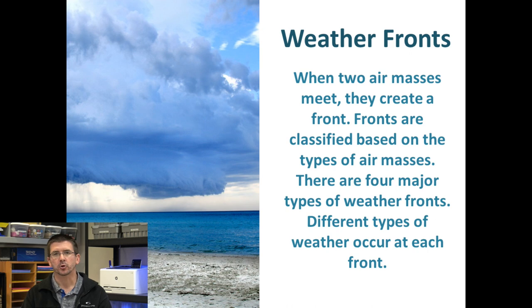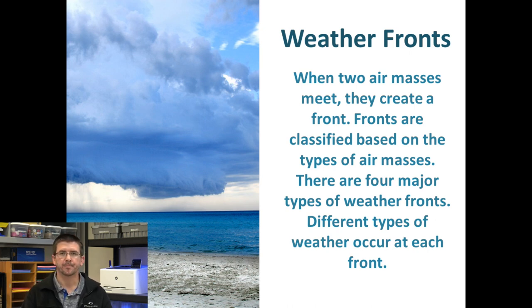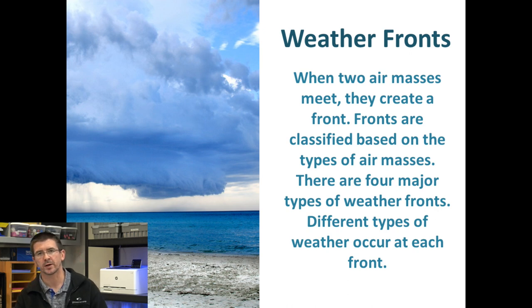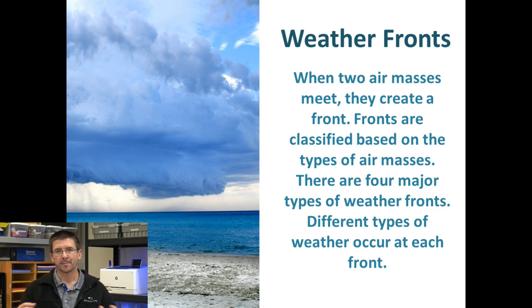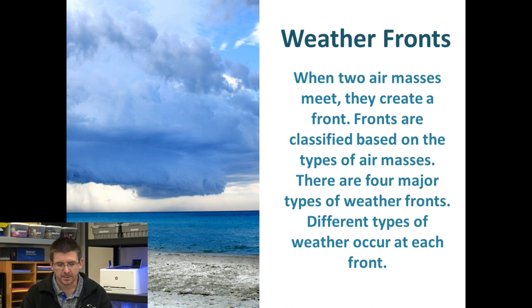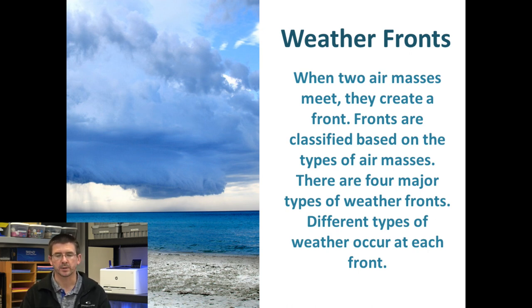A front occurs when two air masses meet. Basically, as air masses move around the planet, they bump into each other from time to time, and we can classify these fronts based on the types of air masses that are coming together.